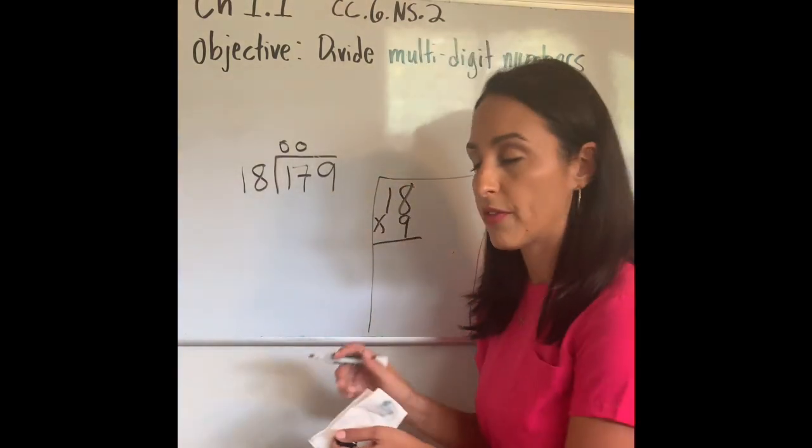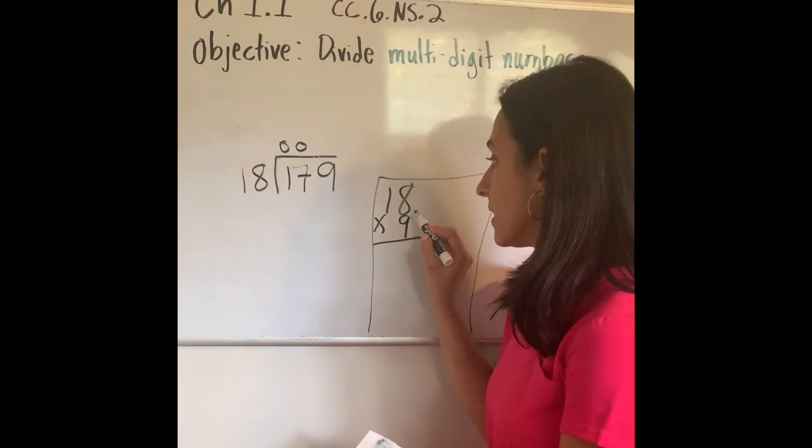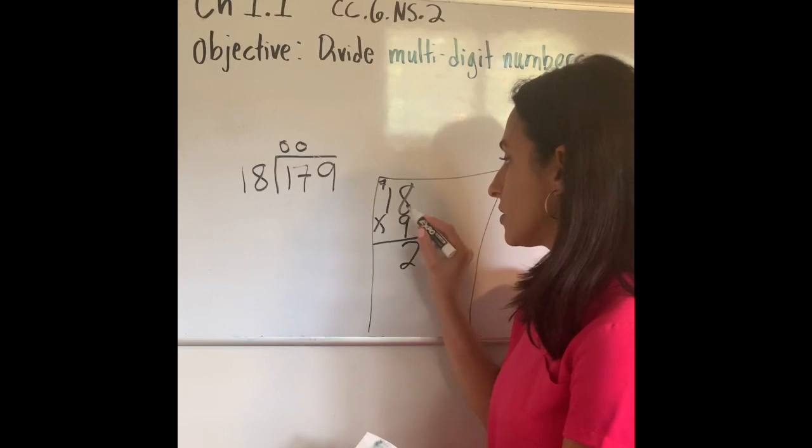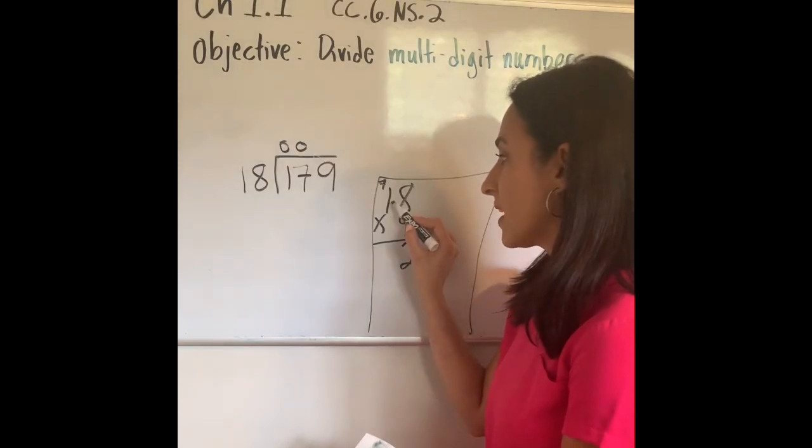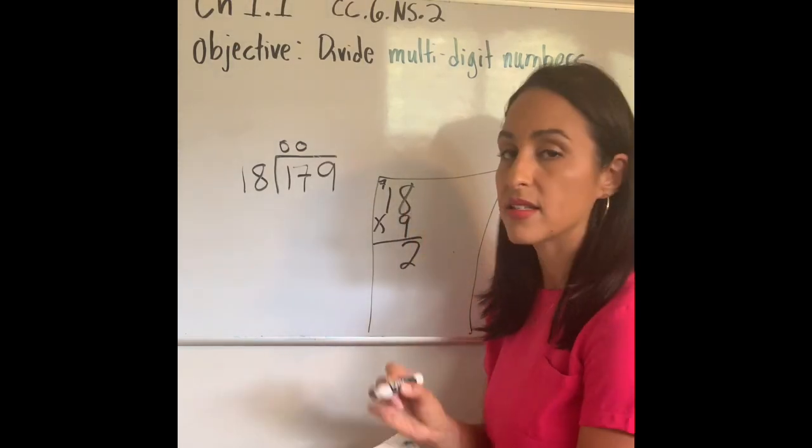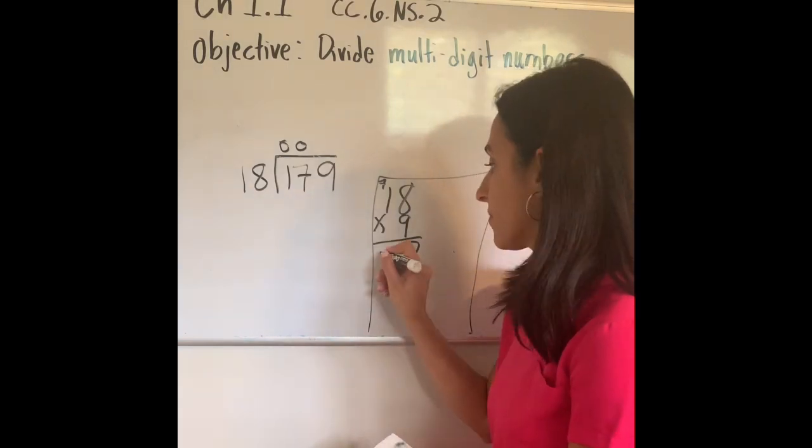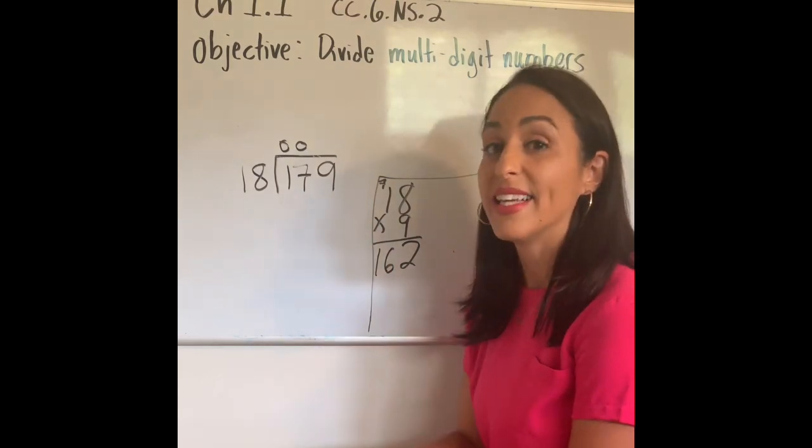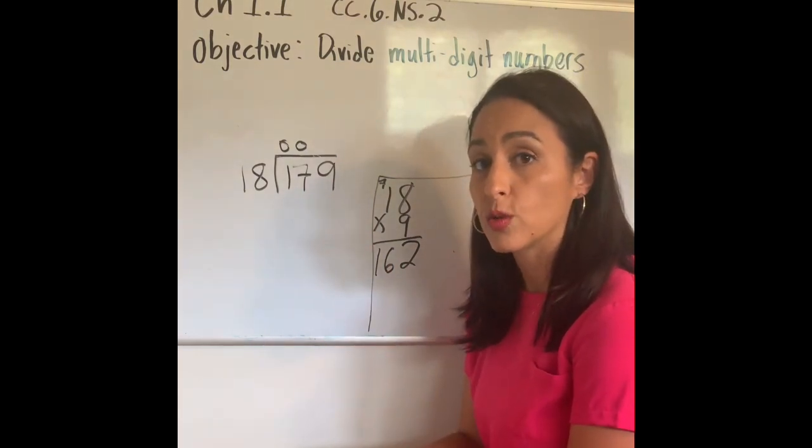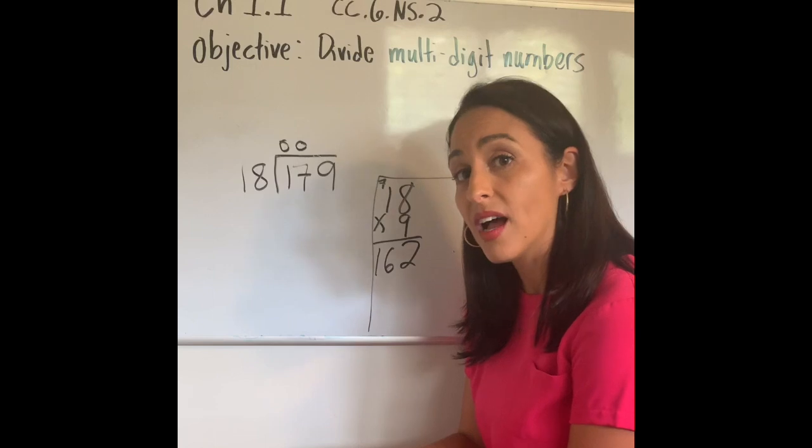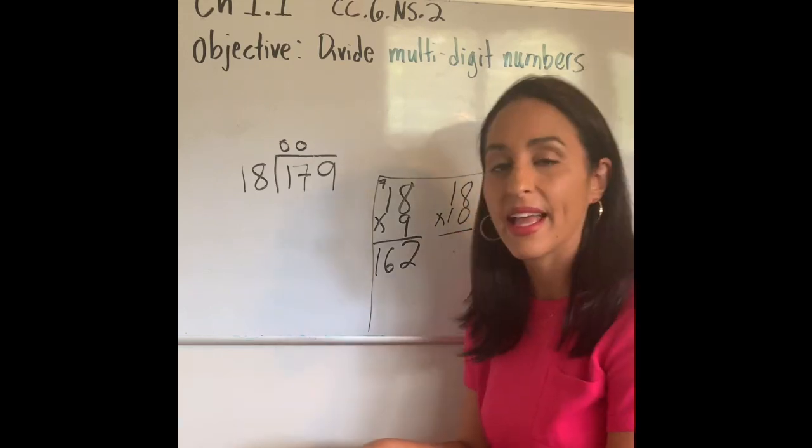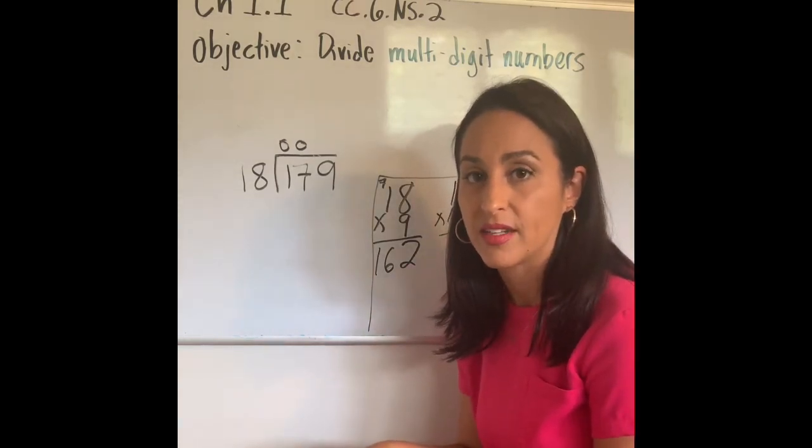18 times 9—let's see what it gives us. I'm going to use that quotient we got from the previous problem. 9 times 8 is 72. 9 times 1 is 9, and 9 plus 7 gives me 16. 162. Is 162 close to 179? Yes, it's very close. Is it close enough?